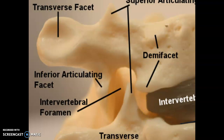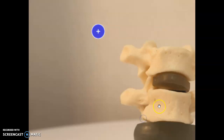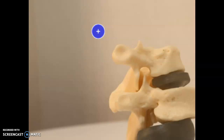There are the two demi-facets. The intervertebral disc pushes apart the vertebral bodies, and that leaves space for the intervertebral foramen — spinal nerves come out of this. Here's the superior articulating facet and here's the inferior articulating facet; they basically form a joint together. These are very straight up and down, whereas on other vertebrae there's a little bit of variation.